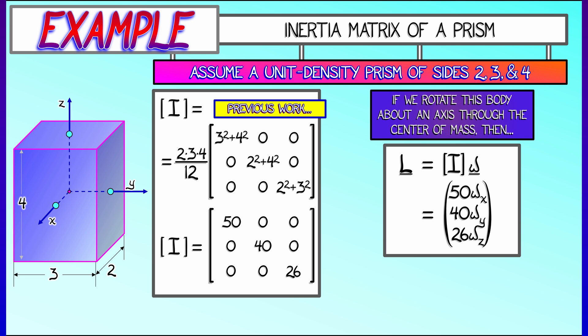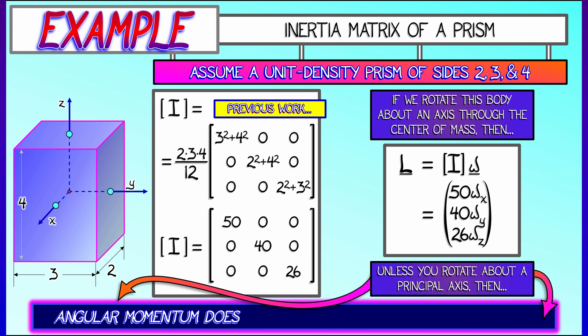But let's observe: unless you are rotating about one of the three principal axes — the x, y, or z axis — then the angular momentum vector is not pointing along the axis of rotation. The angular momentum and the angular velocity are not parallel vectors.